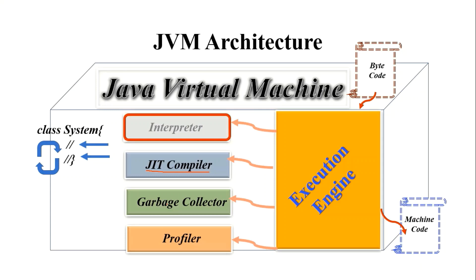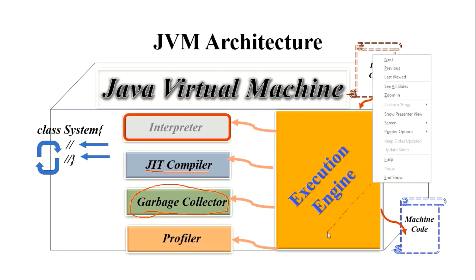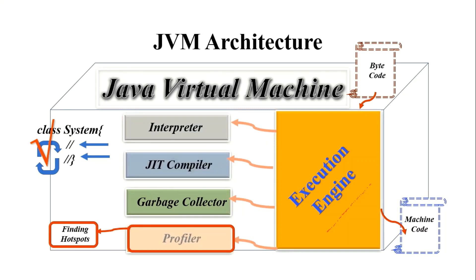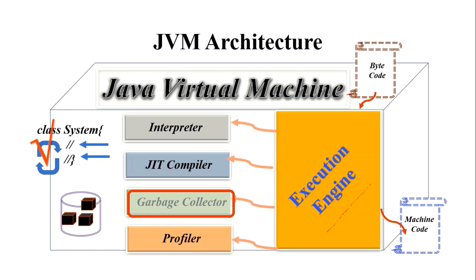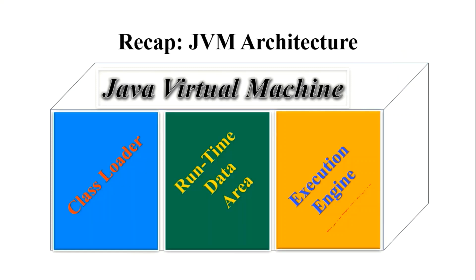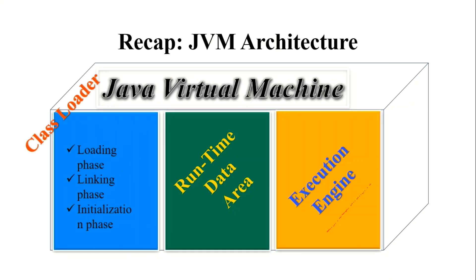The most important remaining component is the garbage collector. The garbage collector is a member of the third component of JVM — the execution engine. Its responsibility is collecting and destroying objects that are no longer in use. This is all about the Java Virtual Machine.